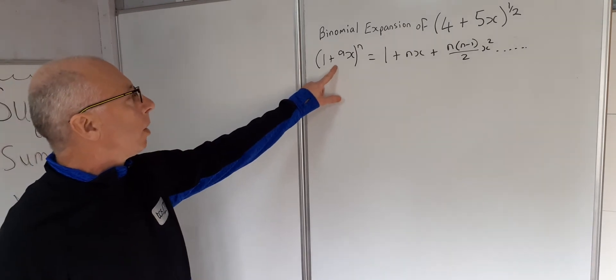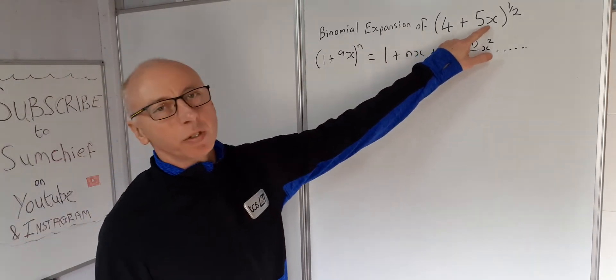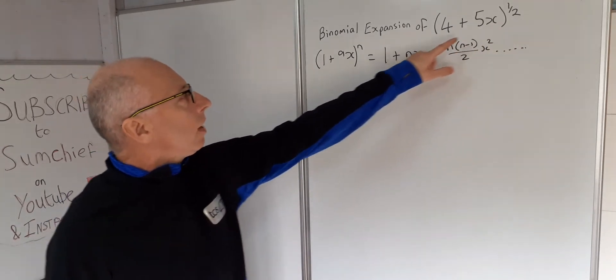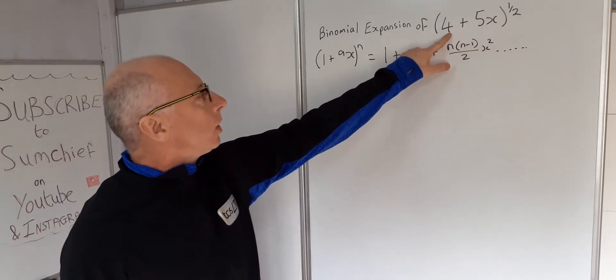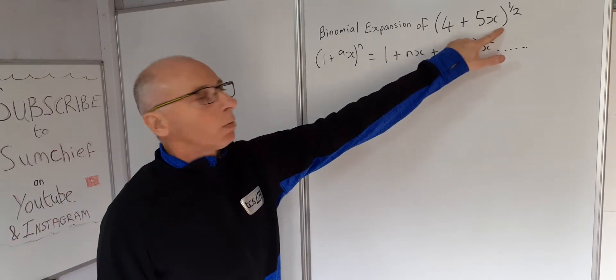We've got a little bit of a problem here. We've got 1 plus ax and here we've got 4 plus 5x. So the 5x wouldn't necessarily be a problem but this 4 is, we need it in this format. So let's see if we can do anything with what we've got here.